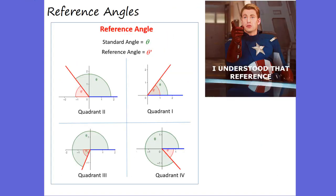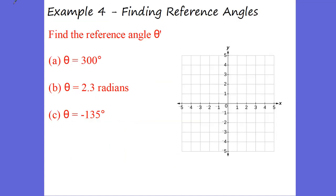They take a little bit of work and they're very systematic — they require you to think. Now, we talked about reference angles. The reference angle in quadrant 1 is the same as your angle. In quadrant 2, the reference angle is 180 degrees minus your angle. In quadrant 3, it's your angle minus 180 degrees. In quadrant 4, it's 360 degrees minus your angle. Let's try to find some reference angles.